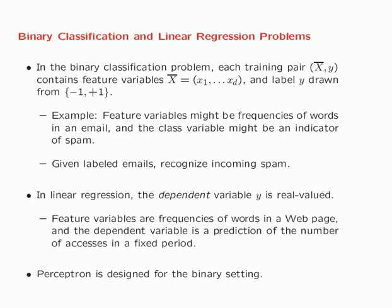In linear regression, the main difference is that your dependent variable y is real valued. Note that we are calling it a dependent variable rather than a label in this case. For example, the feature variables could be the frequencies of the words in a web page, and the dependent variable could be a prediction on number of accesses in a fixed period. You might have training data giving historical information about web pages and their accesses, and for a new web page, you might want to estimate how many accesses it is going to get in a fixed period.